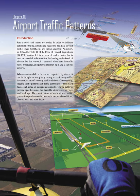Chapter 10: Airport Traffic Patterns. Introduction. Just as roads and streets are needed to facilitate automobile traffic, airports are needed to facilitate aircraft traffic. Every flight begins and ends at an airport. An airport, as defined by Title 14 of the Code of Federal Regulations, 14 CFR Section 1.1, is an area of land or water that is used or intended to be used for the landing and takeoff of aircraft. For this reason, it is essential pilots learn the traffic rules, procedures, and patterns that may be in use at various airports.